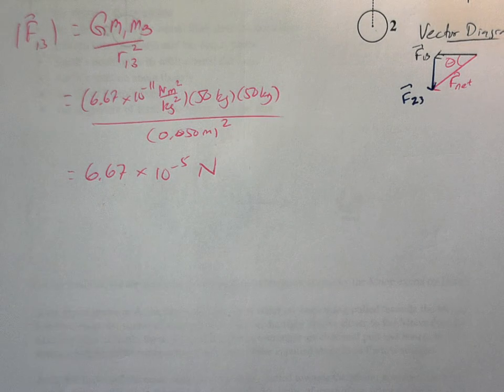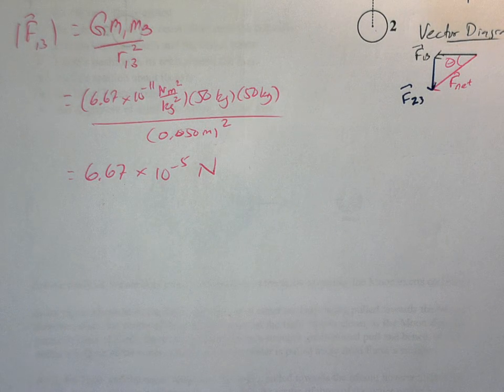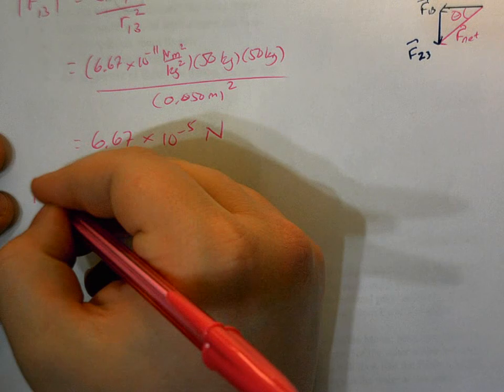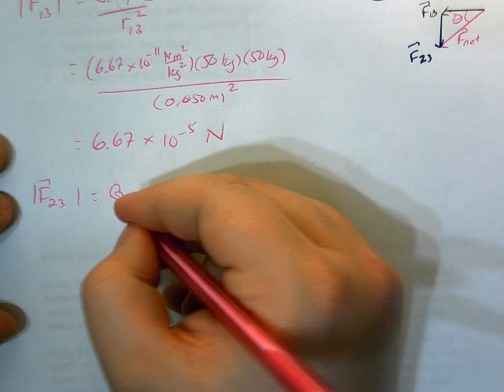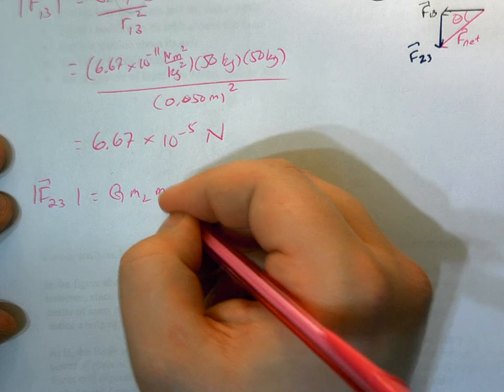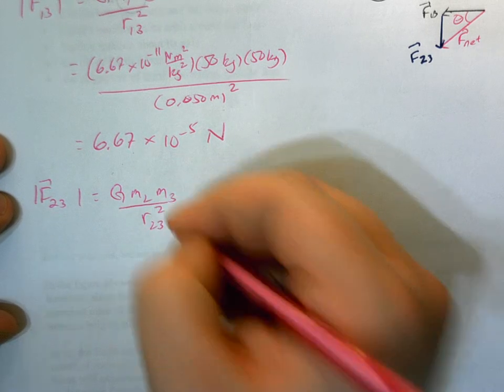Now, we can also calculate F2,3, which is going to be G mass 2 mass 3 divided by R2,3 squared.